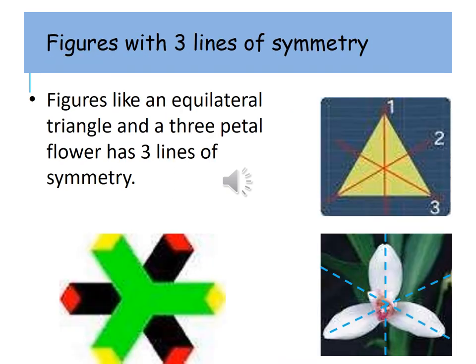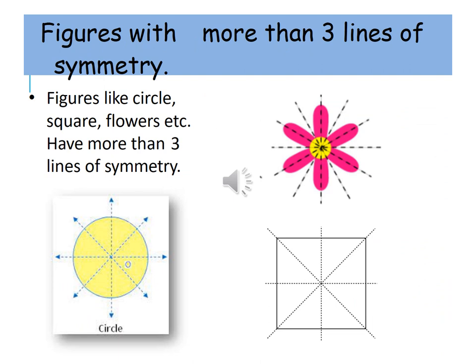Figures with three lines of symmetry: figures like an equilateral triangle and a three-petal flower have three lines of symmetry.